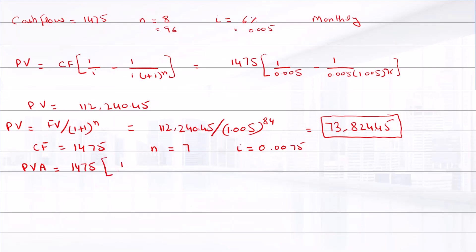The formula gives 1,475 times [1 divided by 0.0075 minus 1 over 0.0075 times 1.0075 raised to power 84], which equals $91,677.10.